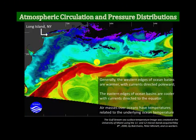Generally, the western edges of ocean basins are warmer, with currents directed polewards — coming up from the equator where they've gathered warmth and flowing up the western edge of the ocean basin, which corresponds to the eastern edge of a continent. This image is the Gulf Stream taken from a satellite image acquired May 8th, 2000. Air masses over oceans have temperatures similar to the underlying ocean temperature.